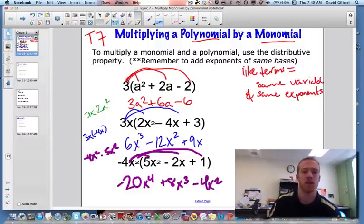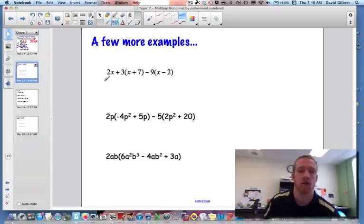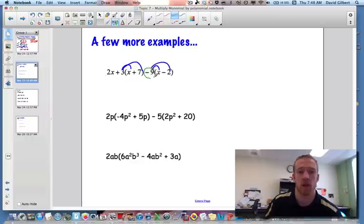Alright, now let's see a few more examples where we've got a little bit more going on. Remember, you can always pause, rewind, rewatch, whatever, if I go too fast. So here we've got to distribute first and make sure that when you distribute, you're distributing this negative 9 to both of them, not just a 9, because the sign goes with the number after it.